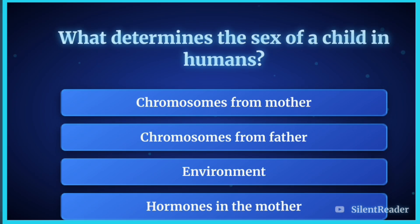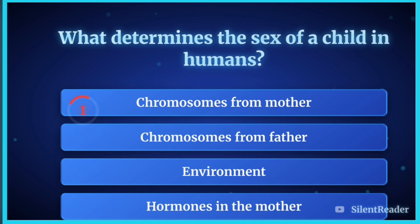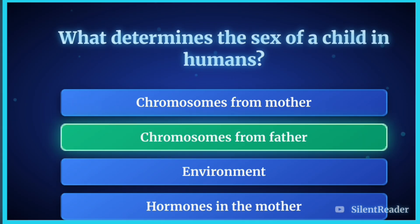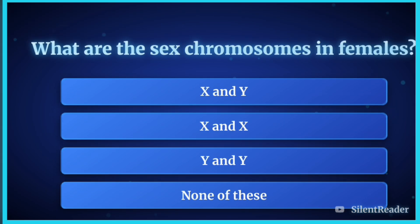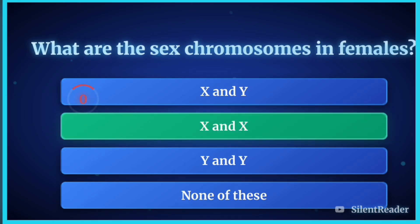What determines the sex of a child in humans? The correct answer is chromosomes from the father. What are the sex chromosomes in females? The correct answer is X and X.